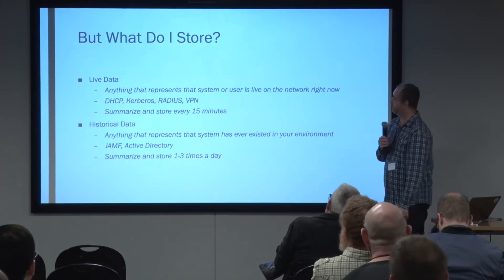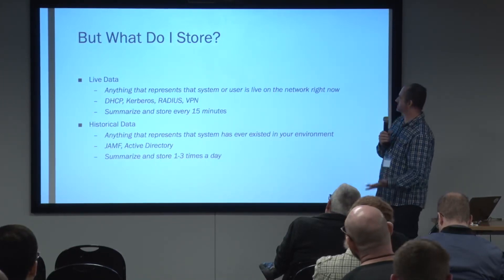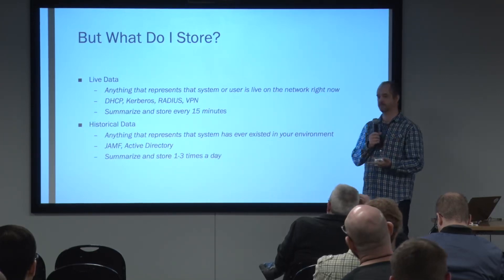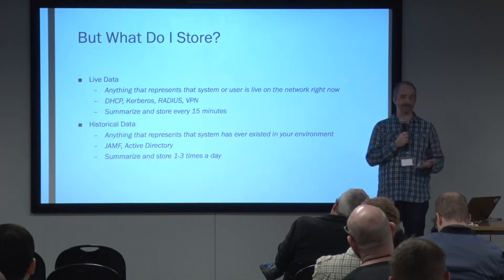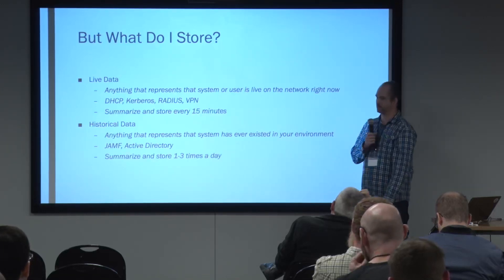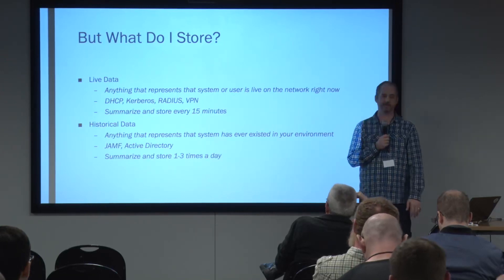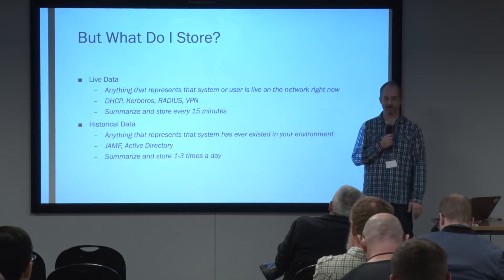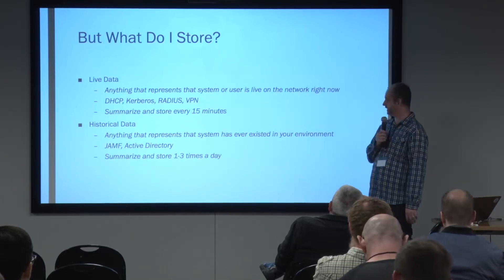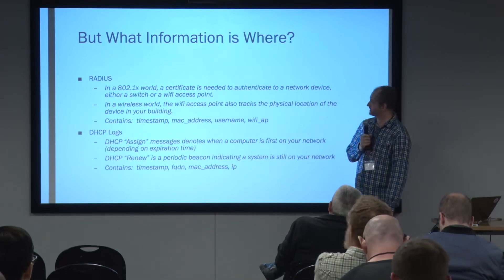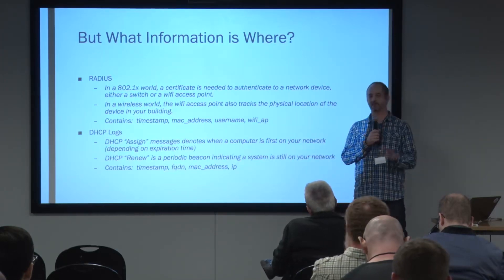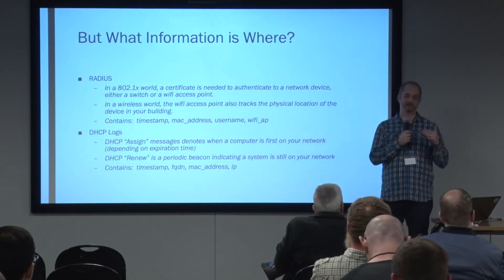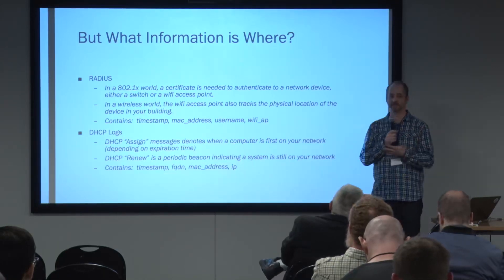What do I store? Live data — anything that represents systems and users on your network right now: when they get an IP address, when they authenticate to RADIUS, when they authenticate to a VPN — that indicates the system is on your network and doing things. Historical data is when you plug into anything that says your system's been on your network at any point in time, like Jamf or Active Directory. In my environment it's easy because I have 802.1X and Active Directory, and those sources give me a lot of information to build this database out.